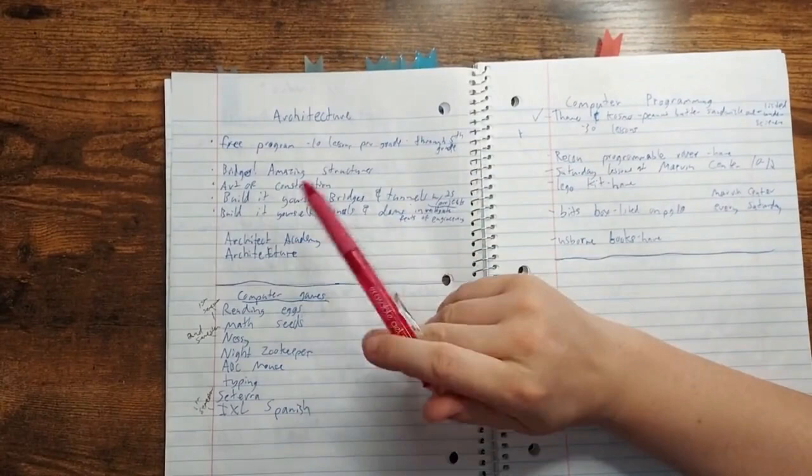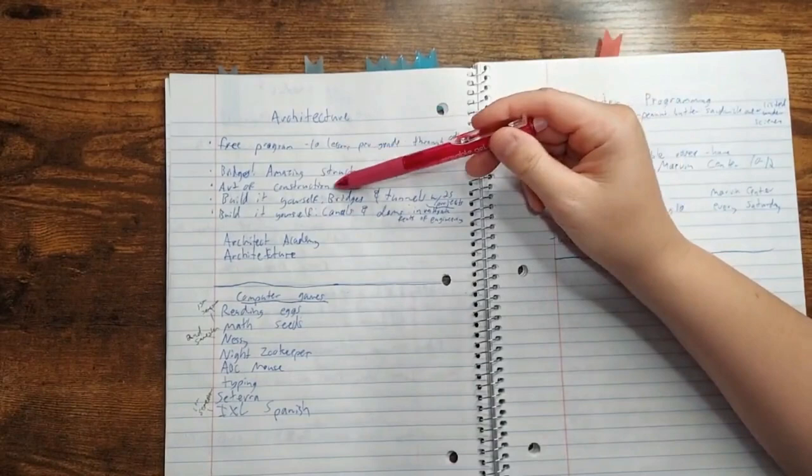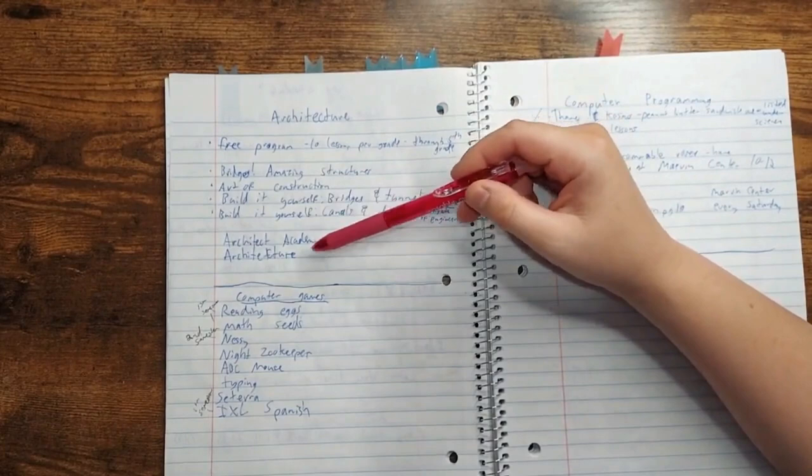Okay, so architecture. I planned this last year. We didn't really get to it, so there's a free program I found that goes through fifth grade, and then there's some books that we had from last year I was going to add in. There's Bridges, Art of Construction, Bridges and Tunnels, Canals and Dams, and then Architect Academy, and the architecture draw book from Mistborn.